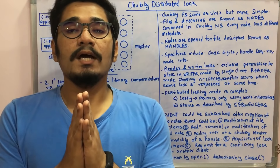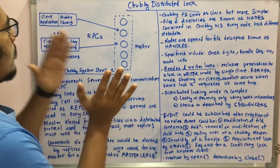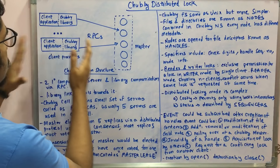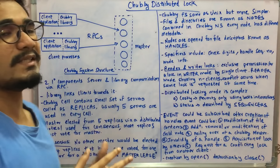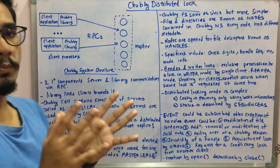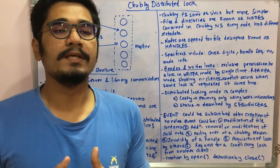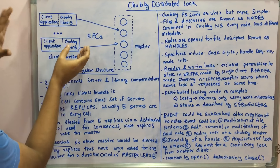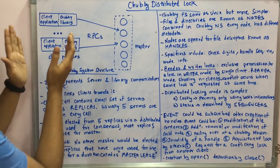Let's see what Chubby Distributed Lock is, some of the terms used in it, and the structure of how it looks. Looking at the diagram, we have some client application blocks as well as a Chubby library. Some client processes are there, and you have the master — like we've seen in GFS — and the communication mainly takes place by means of RPCs, that is Remote Procedure Calls. Two primary components are in the Chubby system: the server and the library, and all communication takes place by means of RPCs. The library links the clients towards itself.